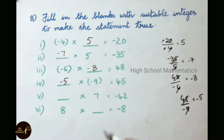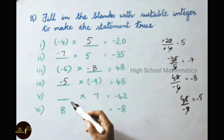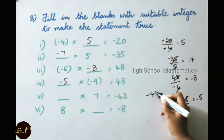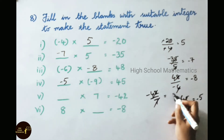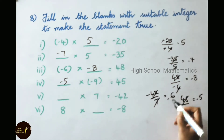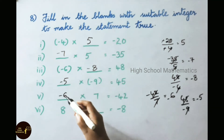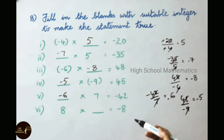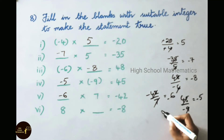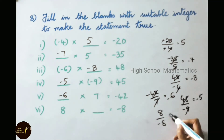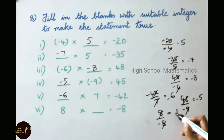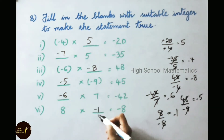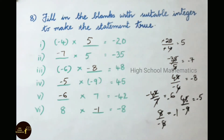Fifth one: blank into 7 equals minus 42. Divide minus 42 by 7. Seven times table: 42 is 6 times. Keep the minus sign, so the answer is minus 6. Minus 6 into 7 equals minus 42. Sixth one: 8 into what number gives minus 8? Divide minus 8 by 8 — that is 1 time. Keep the minus sign, so the answer is minus 1. Therefore, 8 into minus 1 equals minus 8.